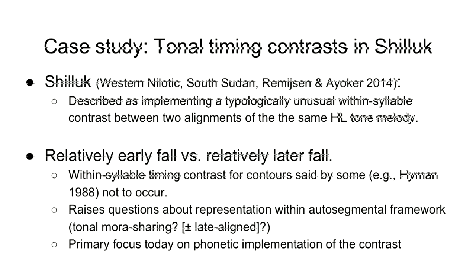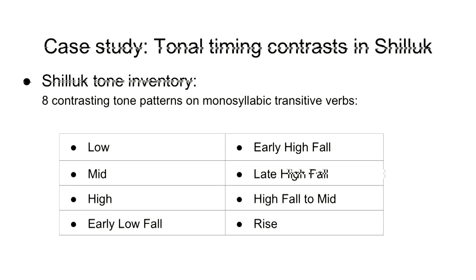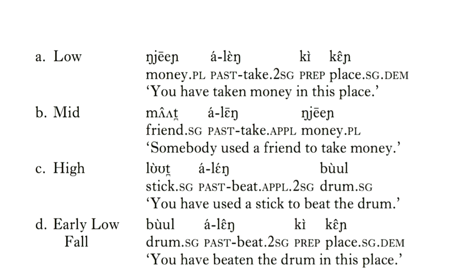Our primary focus is not on that, but rather on the phonetic implementation of the contrast. The reason they want to demonstrate this is because it's been claimed that there aren't such things. On monosyllabic transitive verbs — and apparently almost all transitive verbs are closed monosyllables — we have eight contrasting tone contours: low, mid, high, early low fall, early high fall, late high fall, high fall to mid, and rise. Those last two — early high fall and late high fall — are going to be what we care about.